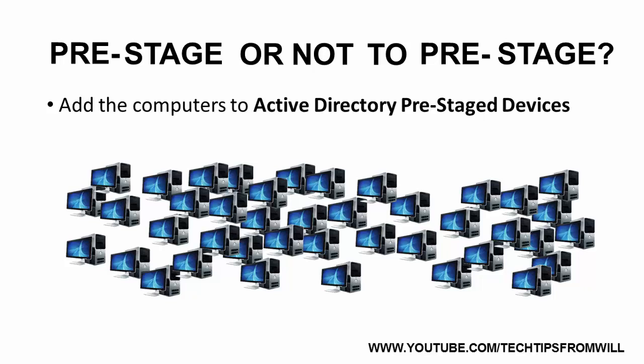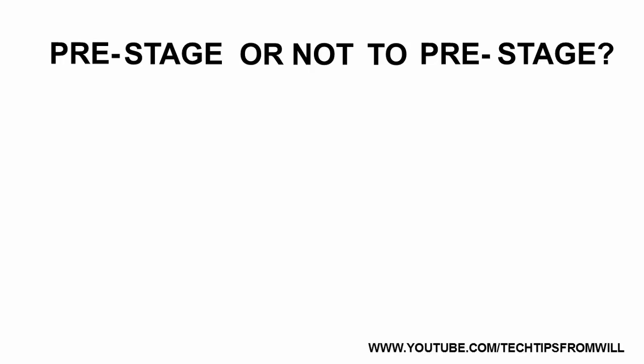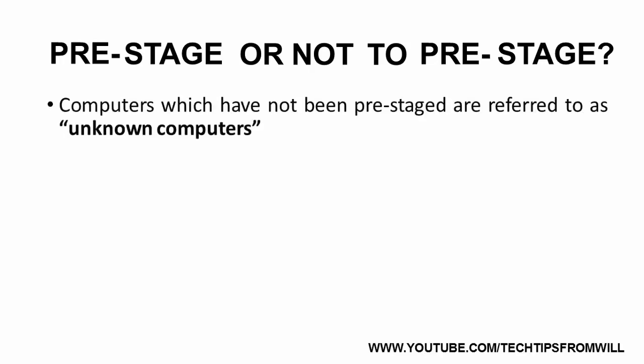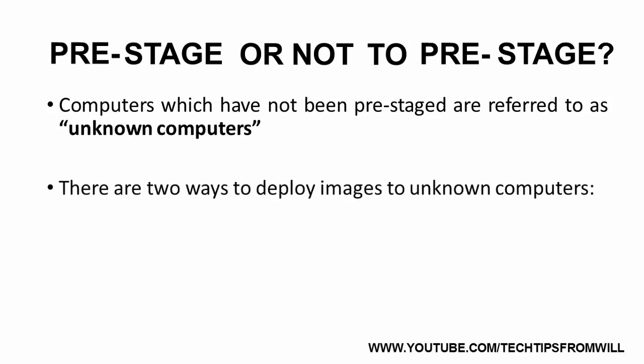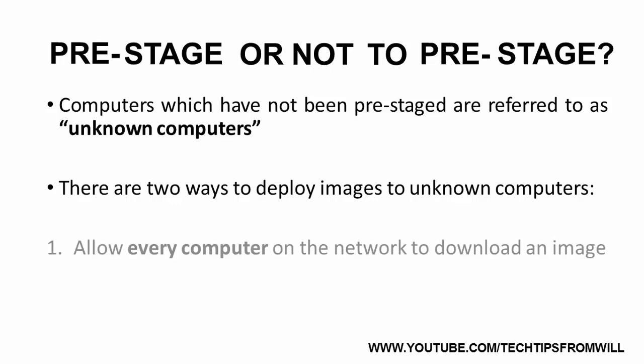Windows Deployment Services makes it possible to deploy images to client computers without having to go to the trouble of pre-staging them first. Although this does make it more convenient to deploy images, it does come at a cost of weaker security. Client computers that have not been pre-staged are also referred to as unknown computers. There are two ways that an administrator can deploy images to unknown computers. The first method is very simple to implement but is very insecure, and that is to allow every client computer on your network to download an image.